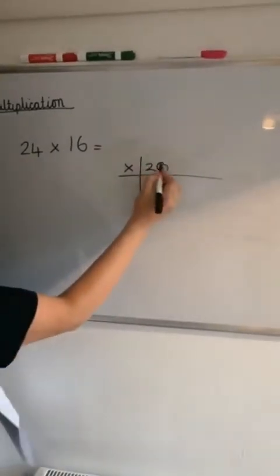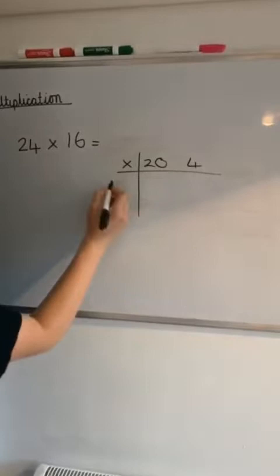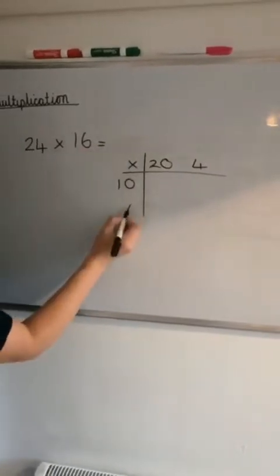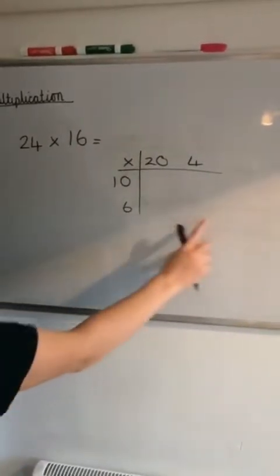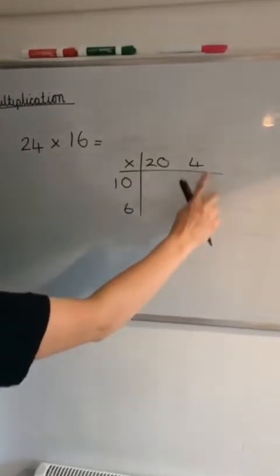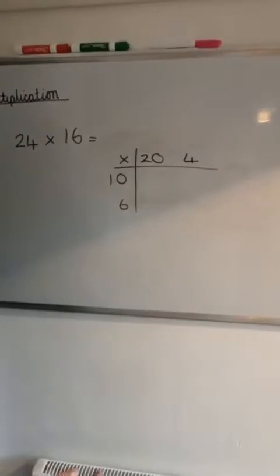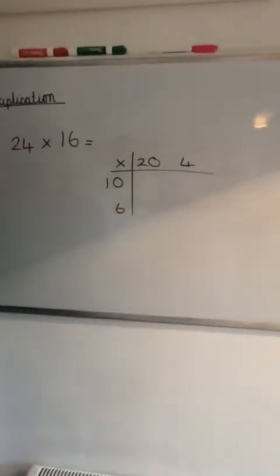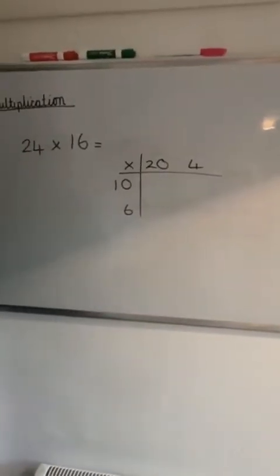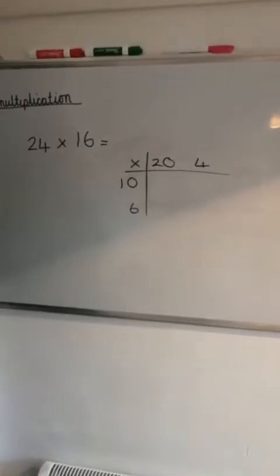We'll start by partitioning with our multiplication symbol. We've got 20 and 4, and 10 and 6. So we're going to start off with this corner here where we've got 4 times 6. You can either count in 4s or you can count in 6s. Let's try in 4s: 4, 8, 12, 16, 20, 24.